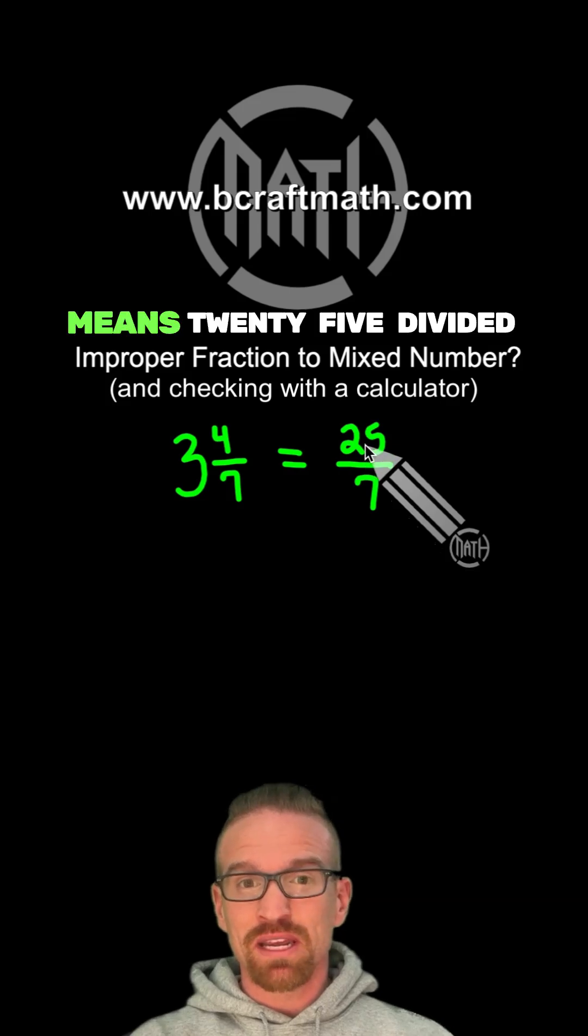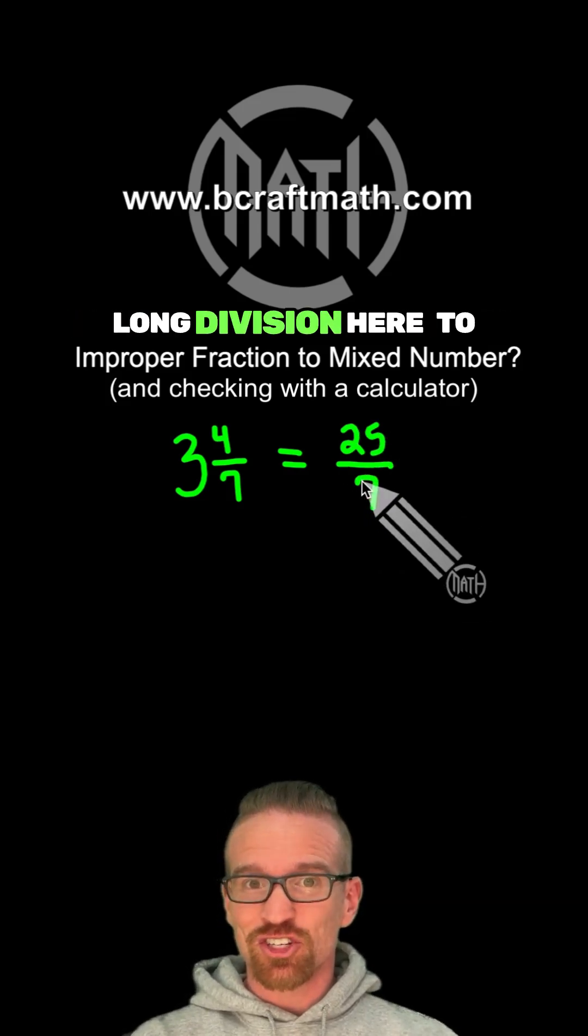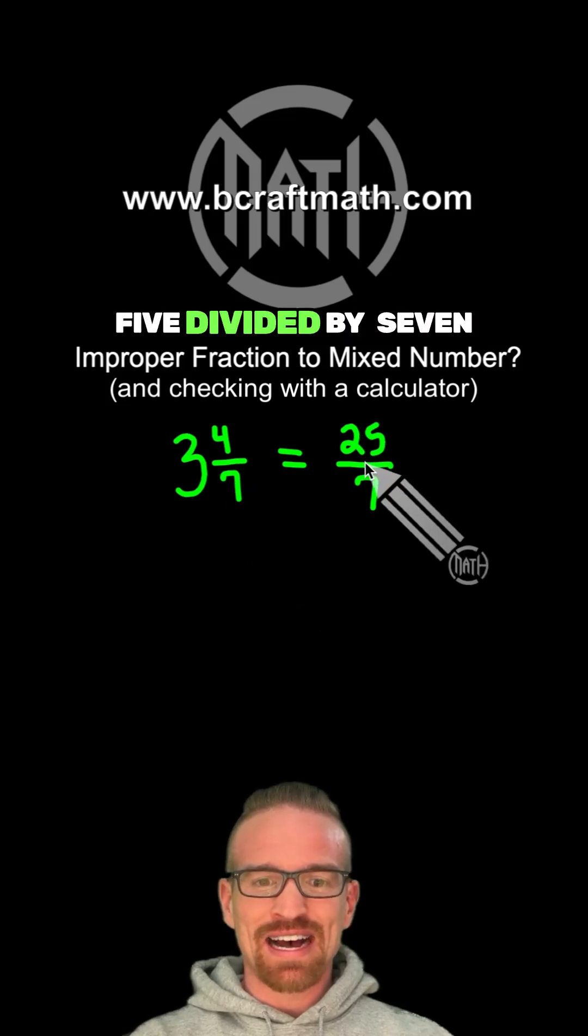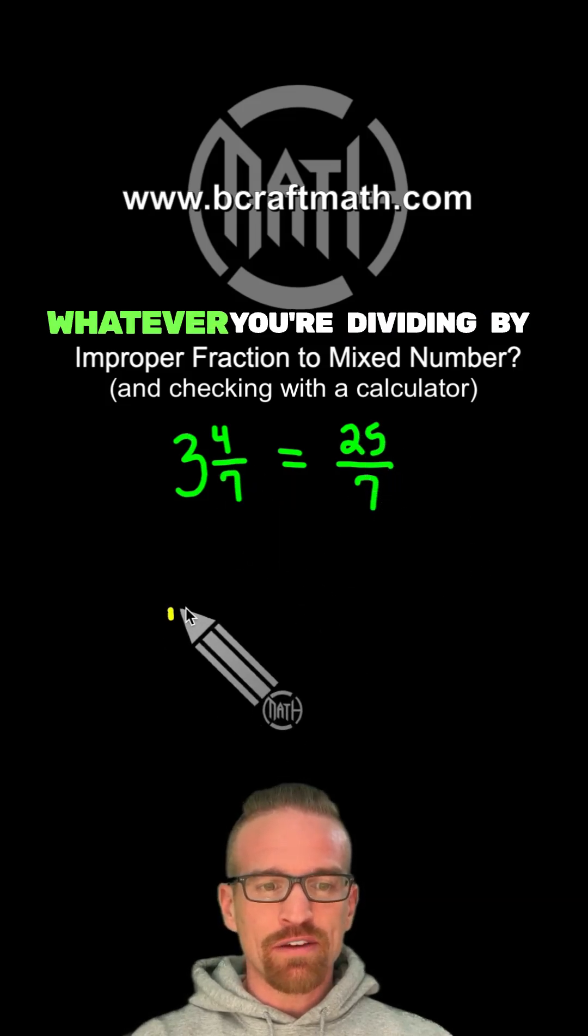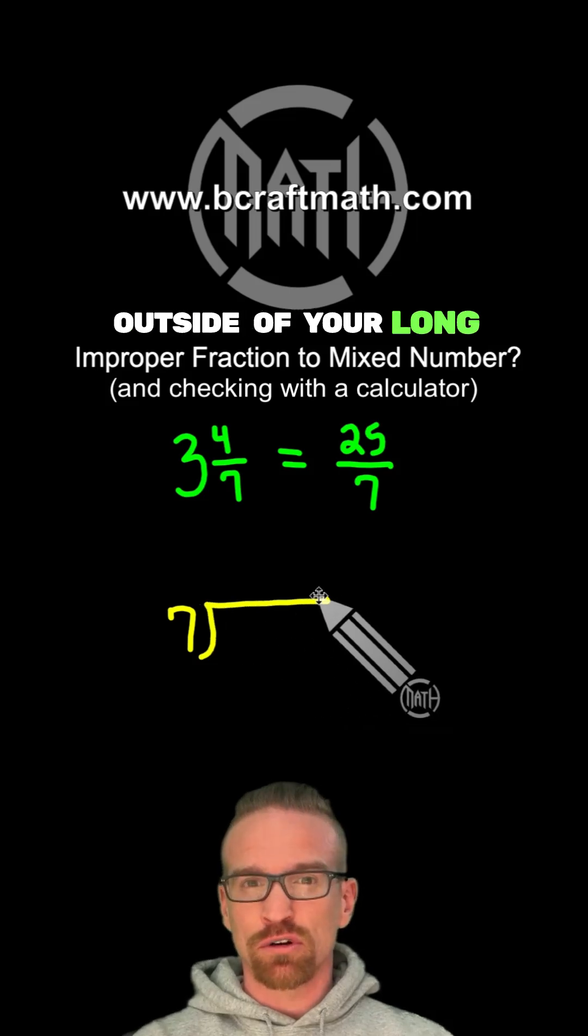25 over 7 means 25 divided by 7. We're going to use long division here to get this mixed number back. So I said 25 divided by 7. 7, whatever you're dividing by will go on the outside of your long division.